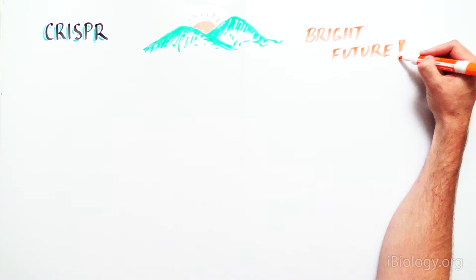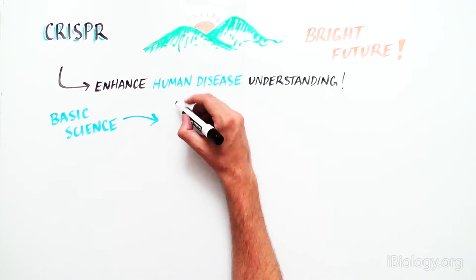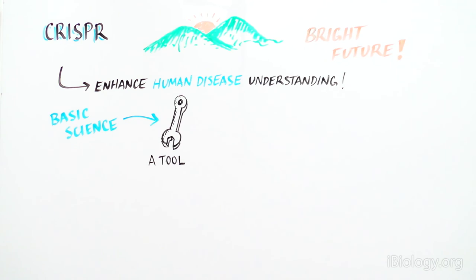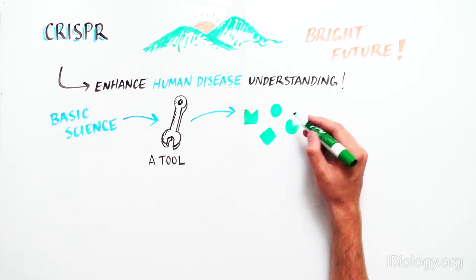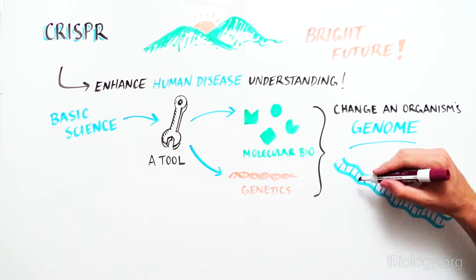CRISPR has a bright future ahead to advance our understanding of human disease by creating a tool from basic research that is now widely used in the fields of molecular biology and genetics to change the genomes of any organism.